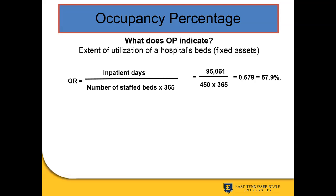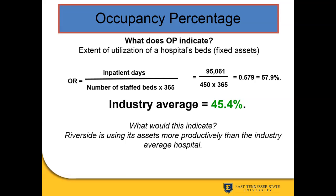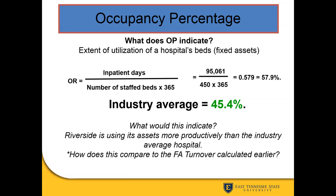For this example, inpatient days are 95,061 divided by 450 staffed beds times 365, giving us 57.9%. Compared to the industry average of 45.4%, this tells us we are using our hospital beds more productively than the industry average. Occupancy rate gives a truer picture than fixed asset turnover because it is not affected by inflation or accounting mechanisms.